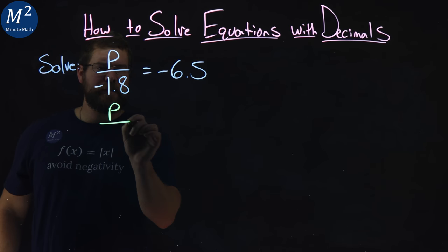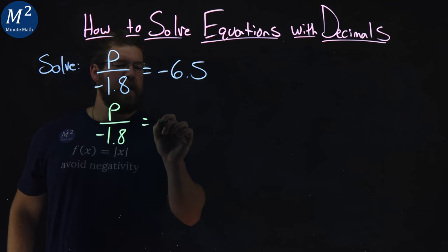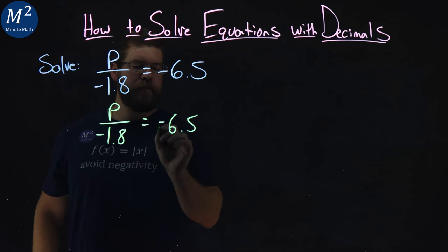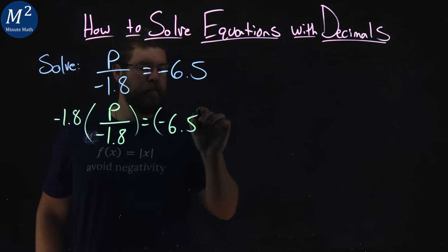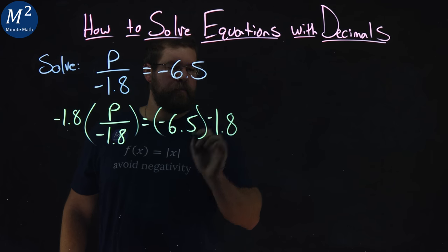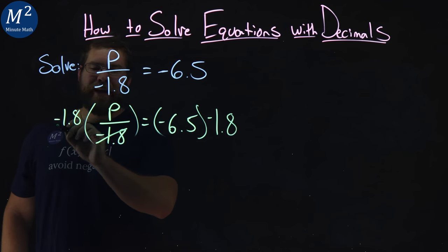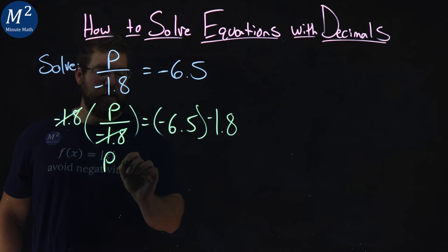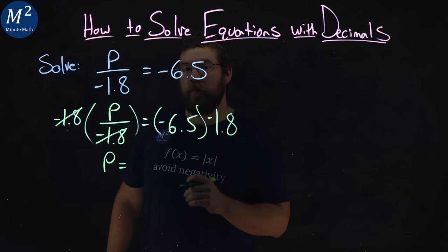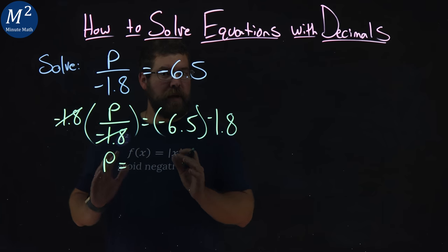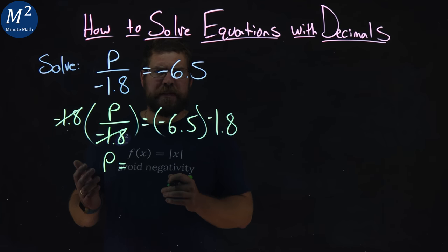So I'm going to rewrite this just so we can see it a little better. p over negative 1.8 equals negative 6.5. I'm going to multiply both sides by that negative 1.8. The negative 1.8 cancels on the left, leaving me p by itself. Negative 6.5 times negative 1.8, that's going to be a positive number, but I'm not sure exactly what that's going to be.